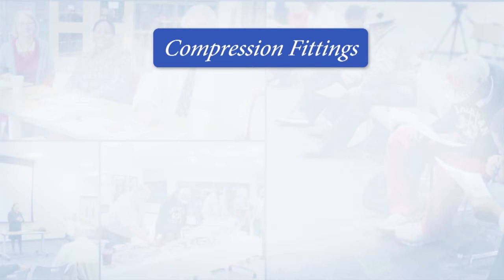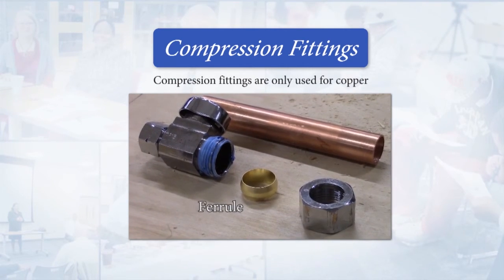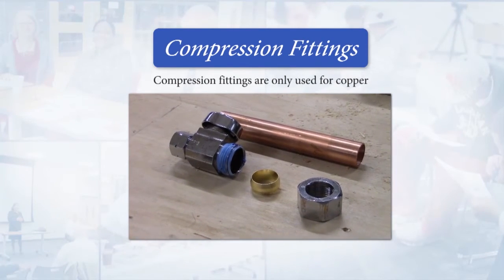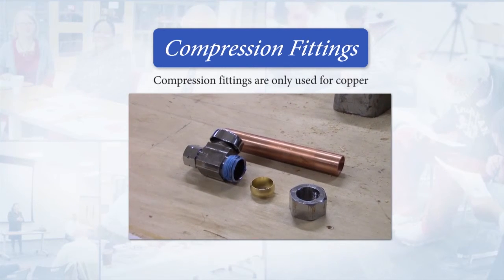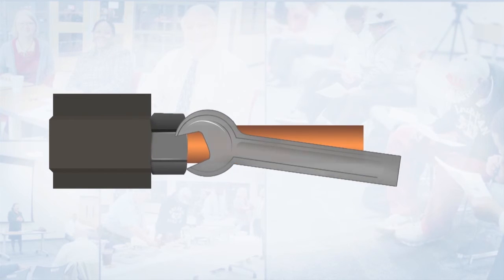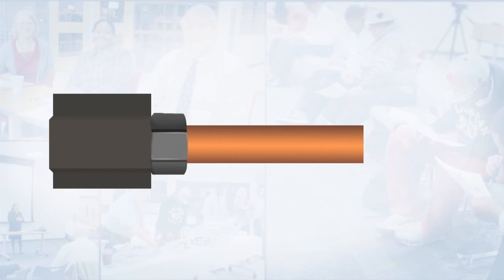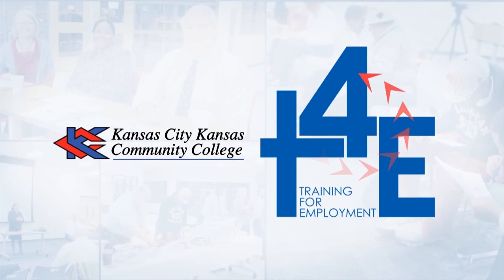We just talked about PEX and copper. Now it's fitting to speak shortly about compression fittings. Compression fittings are only used for copper. The key component of a compression fitting is the ferrule — imagine a gold wedding band ring, that's what a ferrule looks like. The nut and the ferrule are fitted onto the copper pipe, whether it be half-inch, three-quarter, one-inch, or inch-and-a-quarter. The ferrule is fitted onto the pipe, the fitting is slid on, and then you hold the fitting in place and wrench the nut down tight to compress the ferrule around the copper piping, and that stops water from leaking through that fitting.